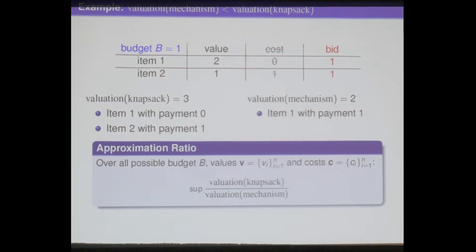This simple example naturally introduces our problem. We want to study the valuation guarantee of our mechanism — that is, the approximation ratio: the ratio between the valuation of the knapsack optimum and the valuation generated by our mechanism, under worst-case analysis over all possible instances.